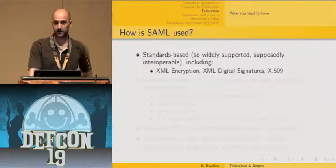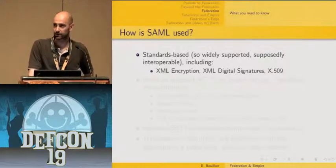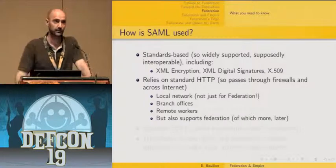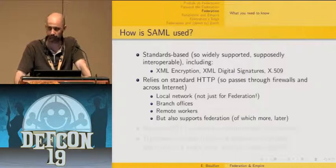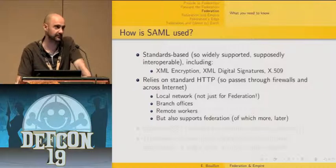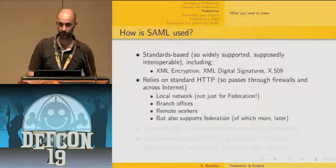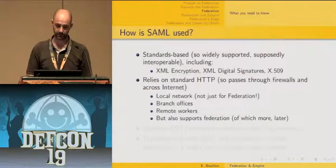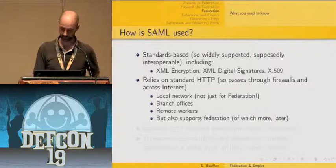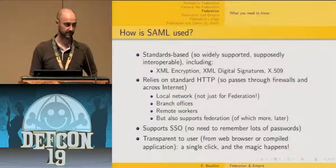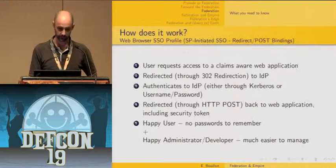SAML is standards-based, widely supported, and supposedly interoperable between implementations. The underlying standards include XML encryption, XML digital signatures, and X.509 certificates. It heavily relies on HTTP for conveying SAML assertions, which easily passes through firewalls. Deployment types include local networks, branch offices, remote users accessing corporate networks, and federated scenarios. The idea is to have a cross-domain single sign-on solution so that users are happy with their experience.